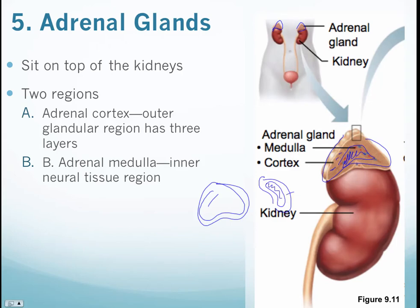Looking at a cross-section of the adrenal gland, the adrenal cortex is composed of three different layers. It's called a glandular region because all it does is create different types of hormones. The inner area is the adrenal medulla — a neural tissue region — because the central and peripheral nervous system stimulates the release of endocrine hormones from inside the medulla.